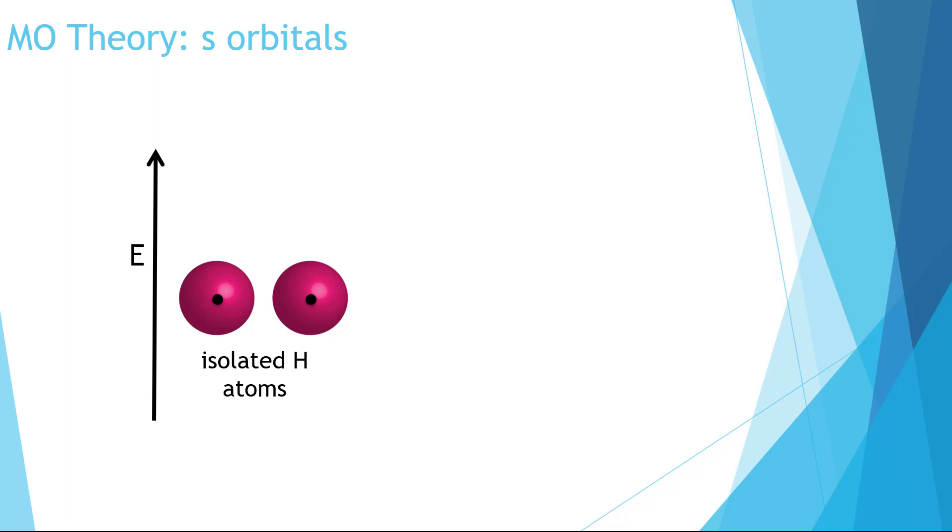Let's look at the simplest case first. Two hydrogen atoms bonded together. When these combine, they can form two different types of orbitals. This will be a common theme throughout MO diagrams. We'll combine a certain number of orbitals to get that same number of new orbitals.